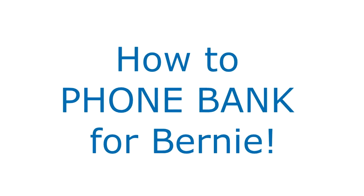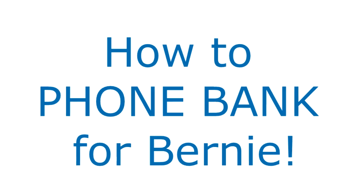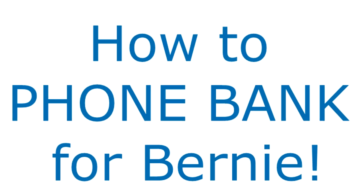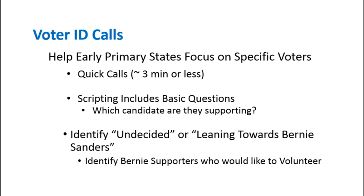Hi, Janine Calkin from Bernie 2016 TV here, and this is a quick intro on how to phone bank for Bernie. So what we're doing is making voter ID calls. These calls target the early voting states. They're quick calls where the campaign provides you an easy script to follow and are used to identify undecided voters and those leaning toward voting for Bernie.